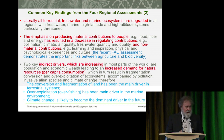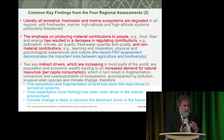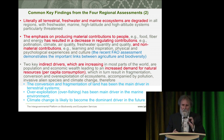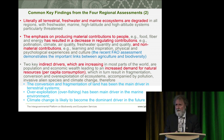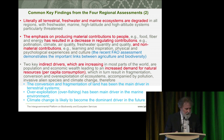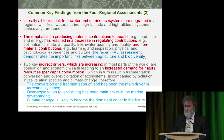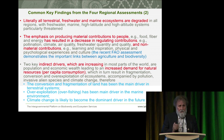Why are we losing biodiversity? Basically we've focused on producing material contributions — food, fibre, energy — but as we've produced them, we've degraded all of our ecosystems. It has undermined pollination services, regulating climate and air quality, and the more cultural and non-material contributions. A recent FAO assessment also demonstrated the important links between agriculture and biodiversity, recognizing that agriculture in all terrestrial systems has been the major driver for loss of biodiversity. In the open oceans, it's overfishing.